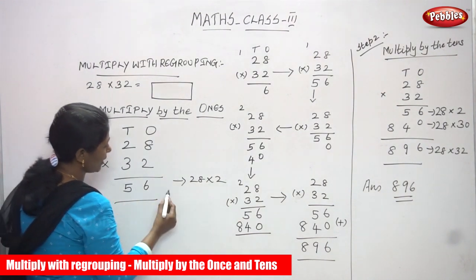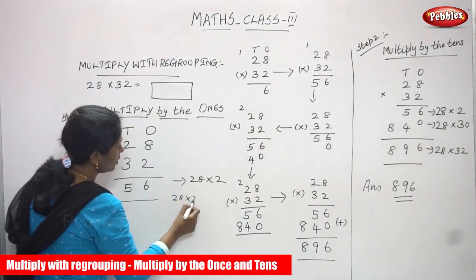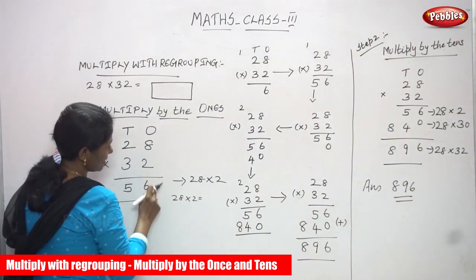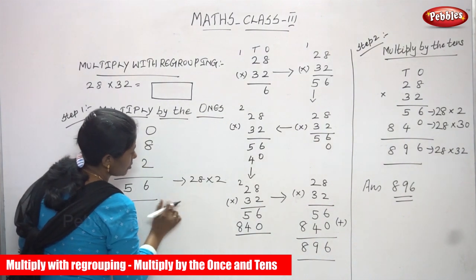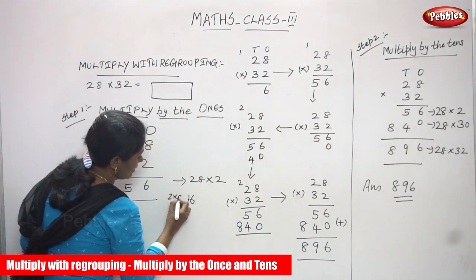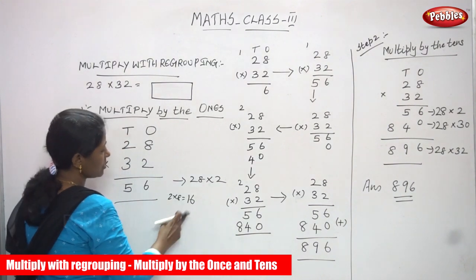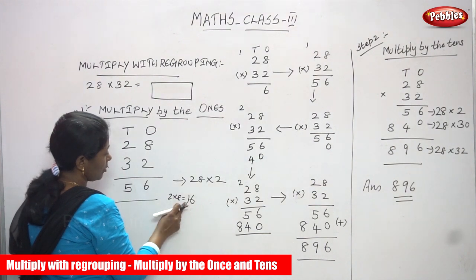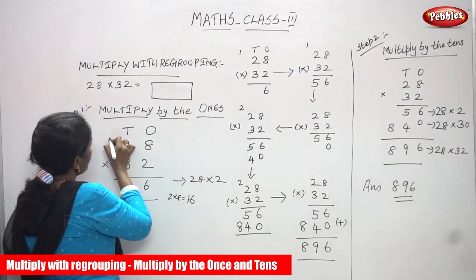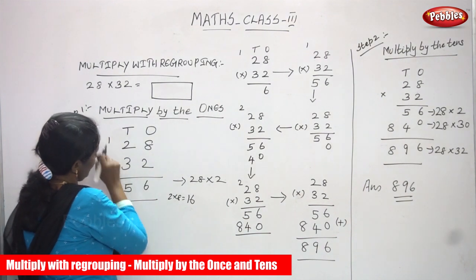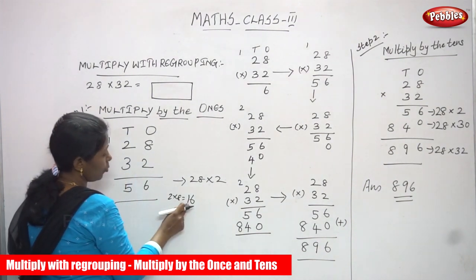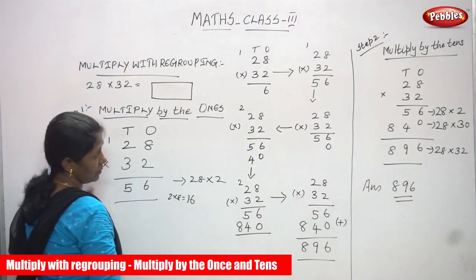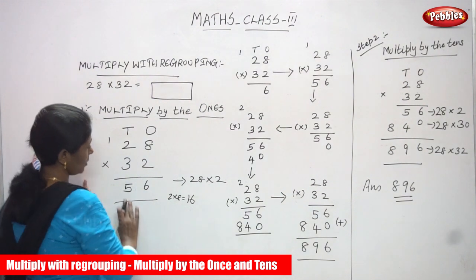So 28 into 2 gives 16. 2 eights are 16. Now 16 means 6 ones and 1 ten. So the 6 I have written in the ones place, and the 1 ten goes to the tens place as a carryover. Then 2 twos are 4, plus the carryover 1 makes 5. So the answer is 56.